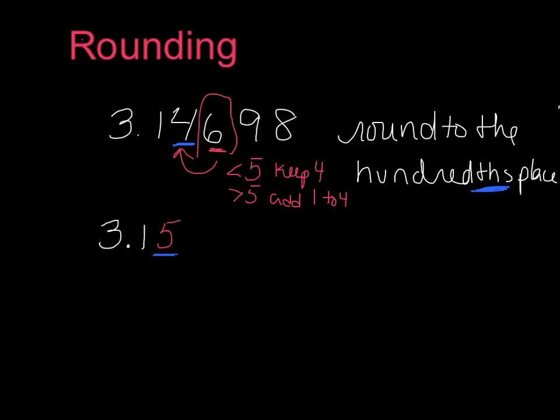So basically, I'm always finding what place am I rounding to, looking to the right. If this number to the right is greater than 5, I have to add 1. If this number is less than 5, then I'm going to keep that value.